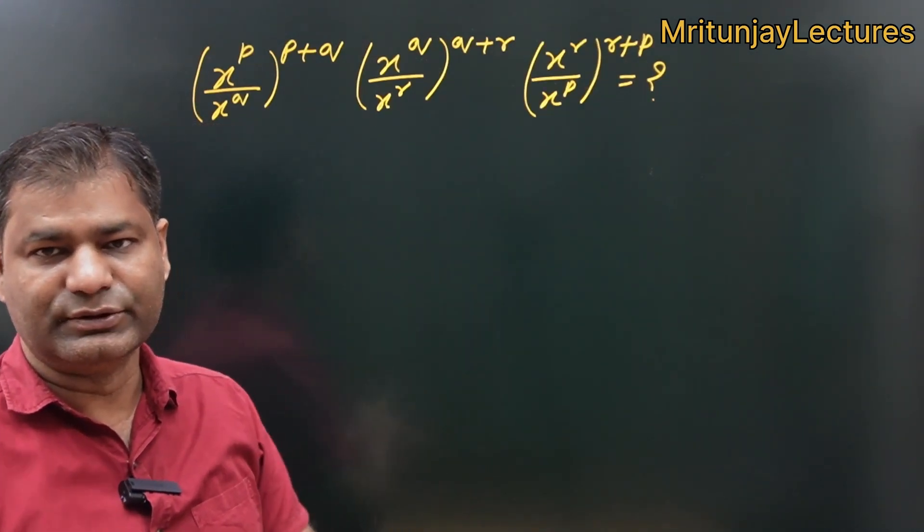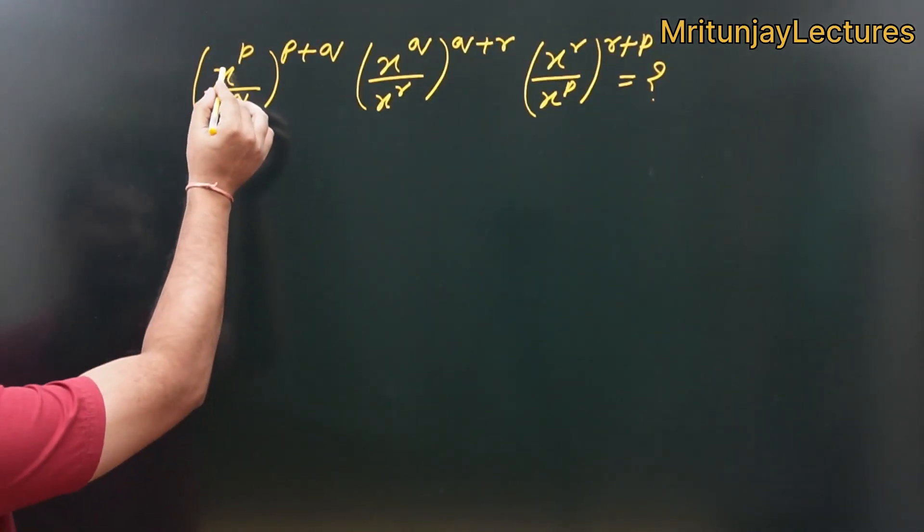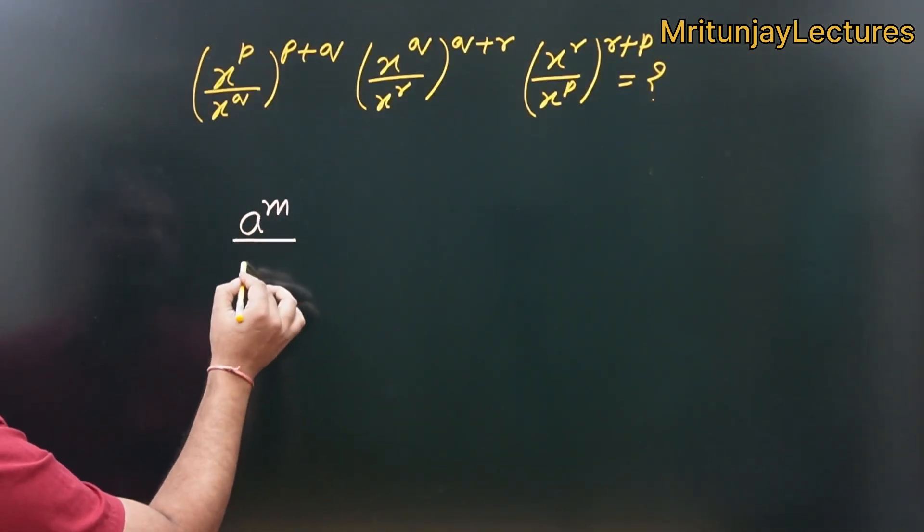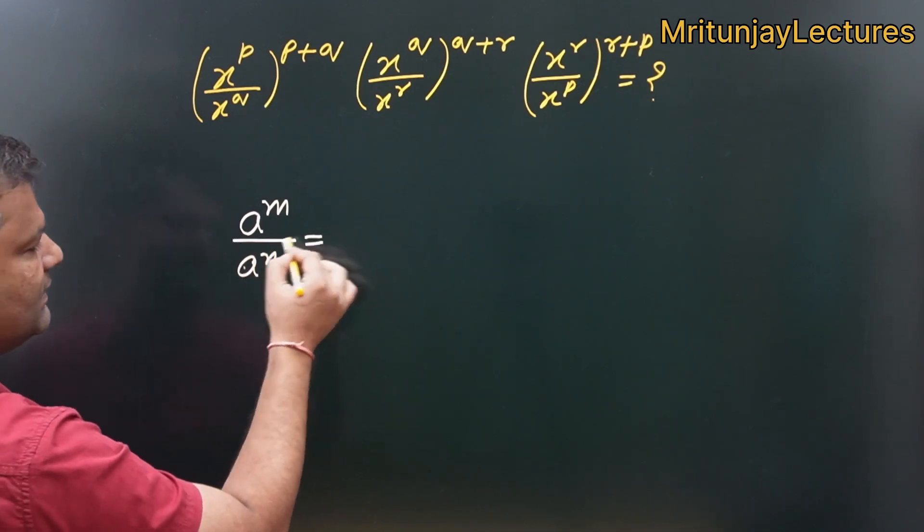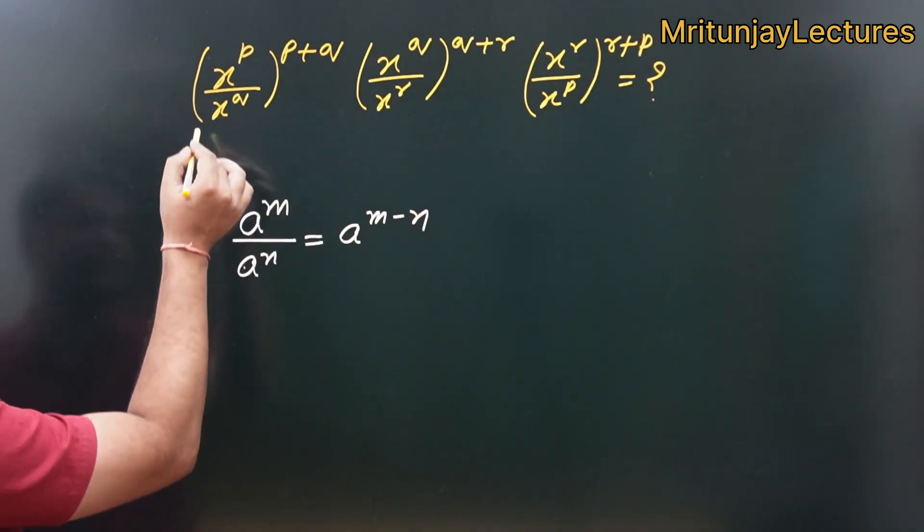Then what about that value? Simply look here very carefully. Here x to the power p, I know that a to power m upon a to power n is written as base is same so written m minus n. So, that property use here.